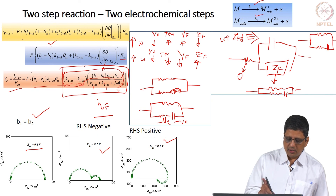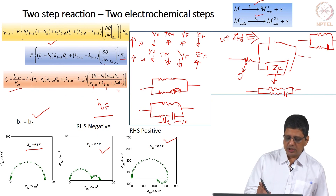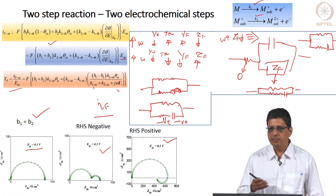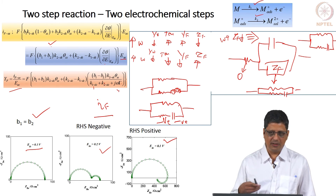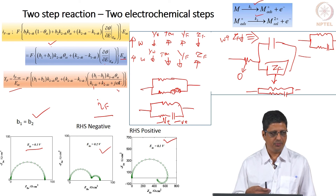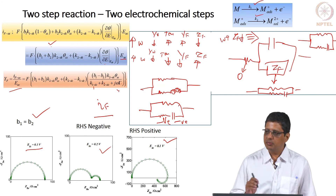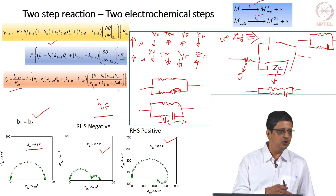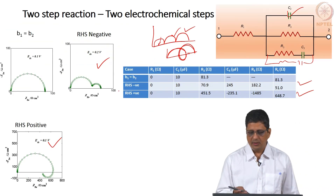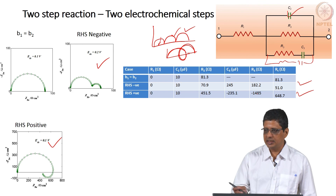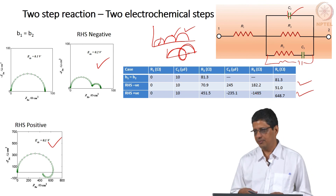You can model an inductive loop with negative capacitance or negative resistance — it does not mean current is flowing in the opposite direction. The same spectrum generated by the reaction can also be generated by a circuit with inductance; that is all it means.